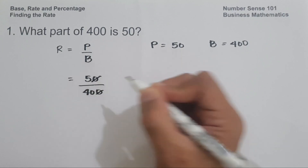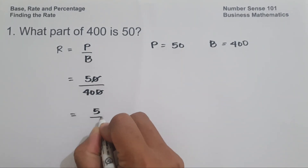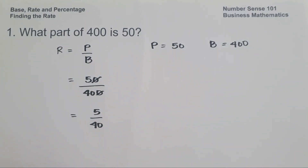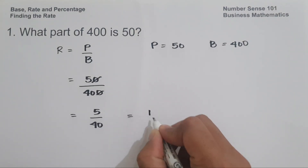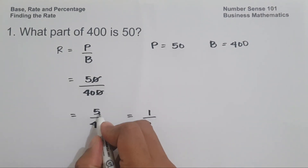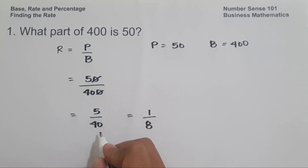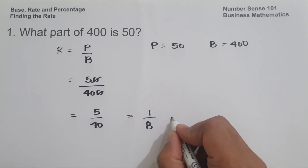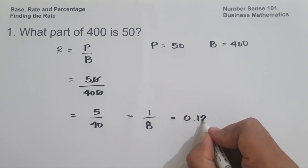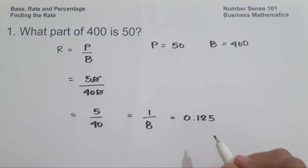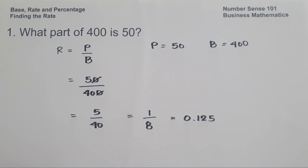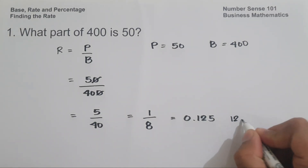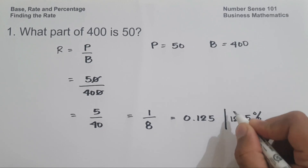Let us cancel the zero, giving us 5 over 40. And 5 over 40 can be written in simplest form. Since 5 and 40 are divisible by 5, it gives us 1 over 8. And 1 divided by 8 gives us 0.125. Since we are looking for the part of 400 which is 50, we write this in percentage: 12.5%. And this will be our answer.